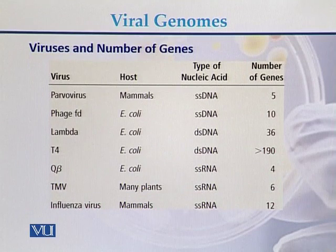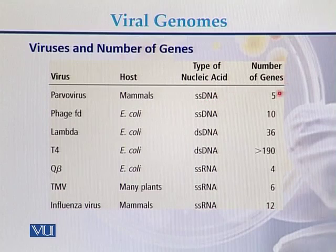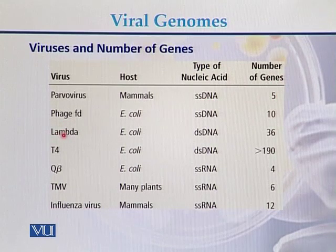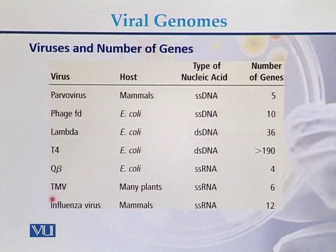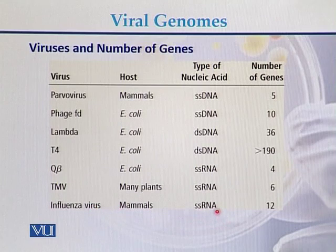For example, parvovirus has mammals as its host, a single-stranded DNA genome, and 5 genes. Lambda virus is a double-stranded DNA virus with 36 genes. Tobacco mosaic virus has a single-stranded RNA genome with 6 genes. Influenza virus also has a single-stranded RNA genome with 12 genes.